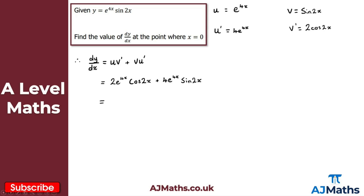To make further calculations easier, I'll factor out 2e to the 4x. Inside the bracket I get cos 2x plus 2 sin 2x.